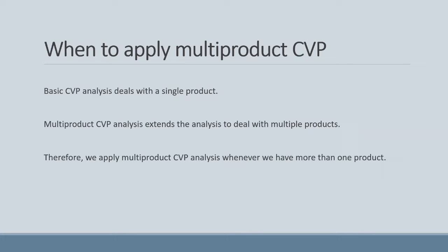So when do we apply Multiproduct CVP? As we saw in our previous video, basic CVP analysis deals with a company or division that manufactures a single product. Such a situation doesn't always apply in real life, as many companies or divisions make multiple products. So Multiproduct CVP Analysis extends the basic analysis to deal with the situation — as soon as we have more than one product, we need to apply Multiproduct CVP.